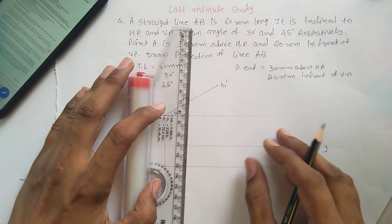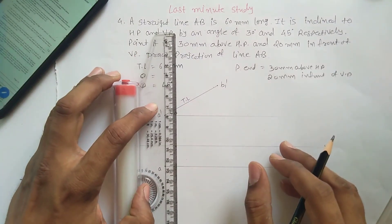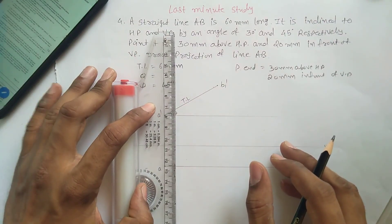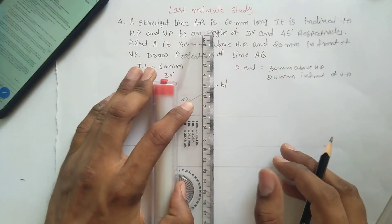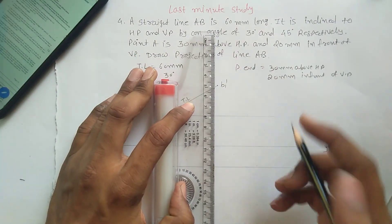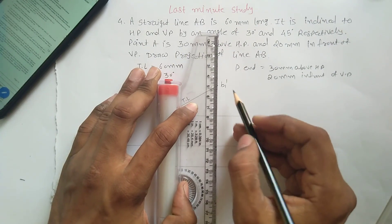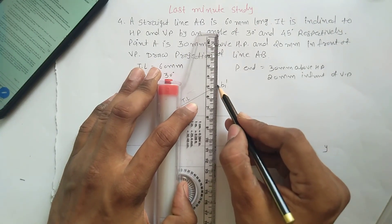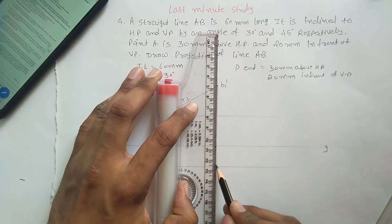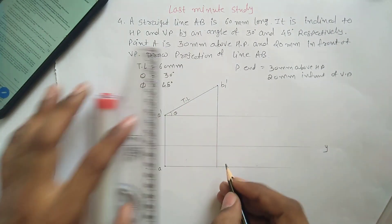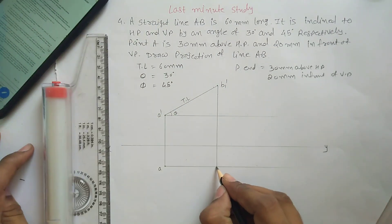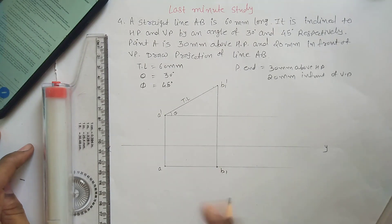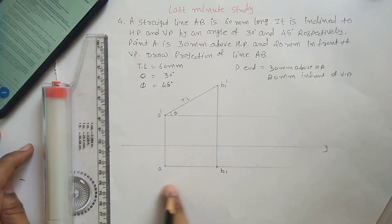Project this line — project B1 dash down onto the reference line. This projected point is your B1.